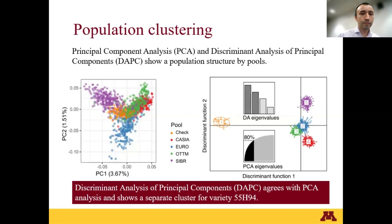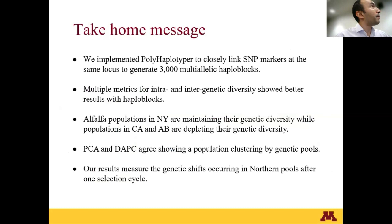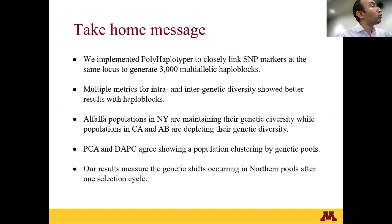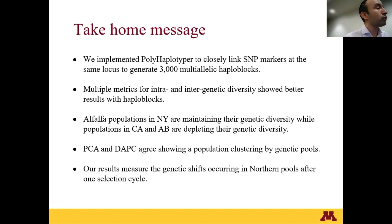In conclusion, we implemented PolyHaplotyper on the DArTag platform to obtain multiallelic markers from SNPs. This was useful because using multiallelic markers we can obtain more information using intra- and intergenetic diversity metrics. We can identify, for example, how New York is a good location for diversity purposes, while other locations such as California and Alberta are depleting genetic diversity because their plants are more selected. We also found that our PCA and discriminant analysis agree and show how the populations are clustering by genetic pools. This is useful for measuring genetic diversity in populations we are generating for improvement of yield or other traits.